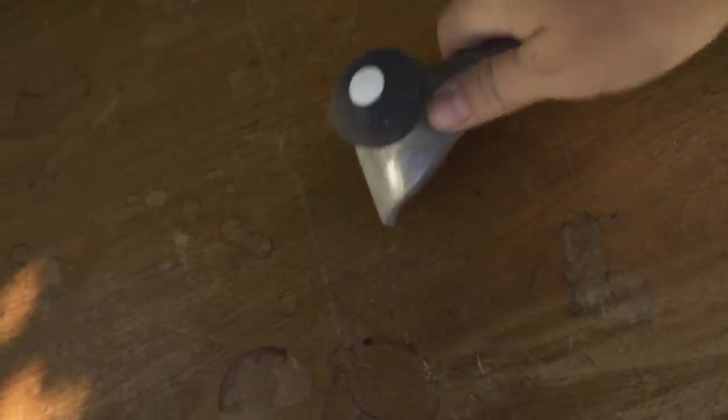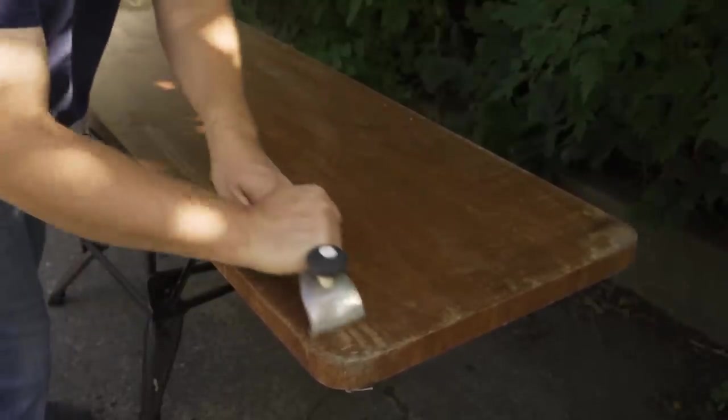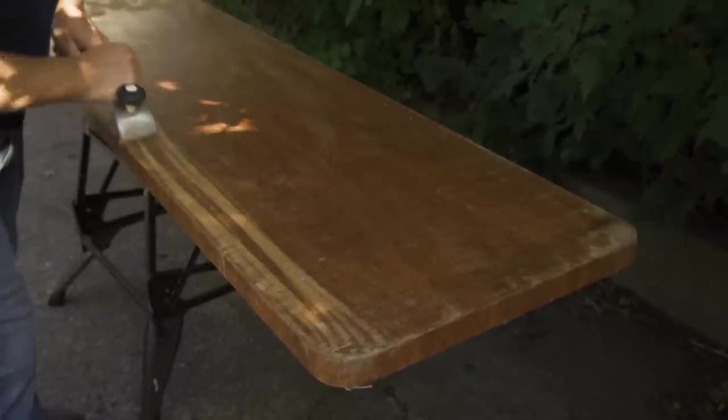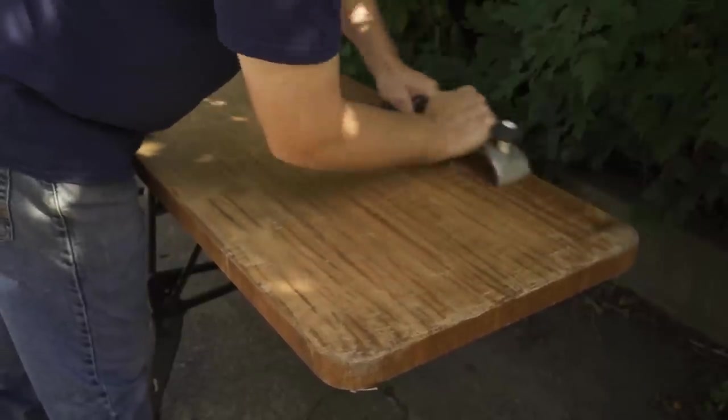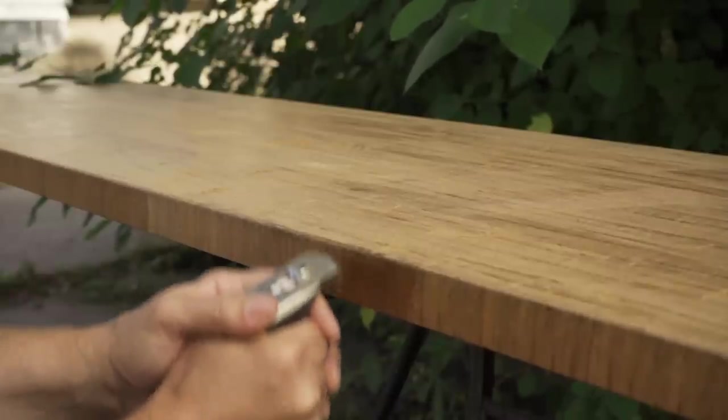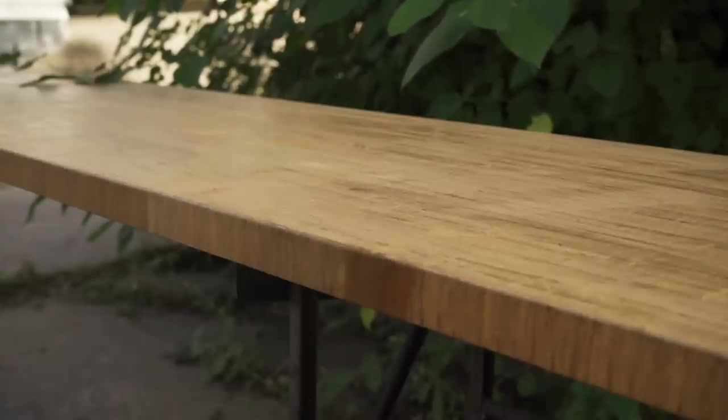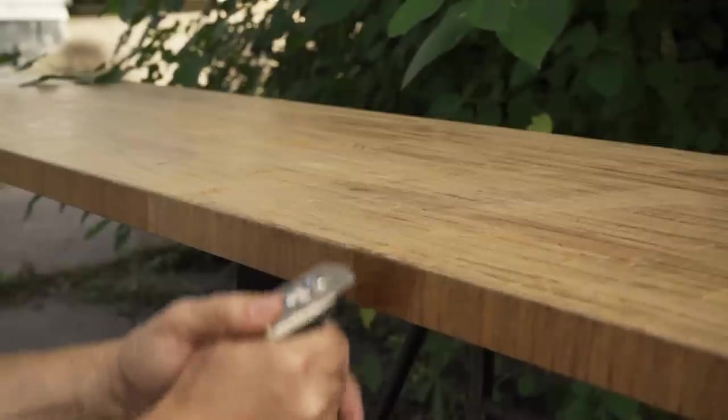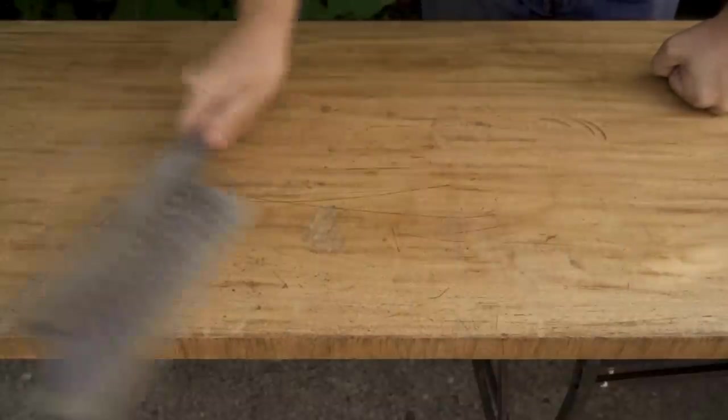First thing to do is to remove the finish. There's not really much left of the finish and I tried the scraper on it. It seems to be working pretty well so I'm just going to go with that method. The grain on this edge banding runs vertically so I have to scrape it up and down.